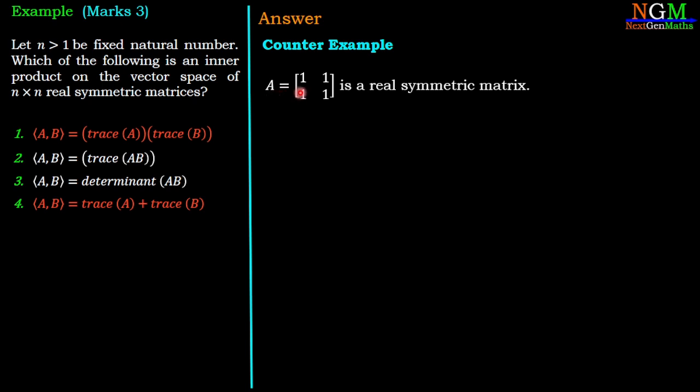Now, A = [1, 1; 1, 1] is a real symmetric matrix, so it is an element of the given vector space of n × n real symmetric matrices. In option 3, we have ⟨A,B⟩ = determinant(AB). So by property 4, ⟨A,A⟩ = determinant(AA).